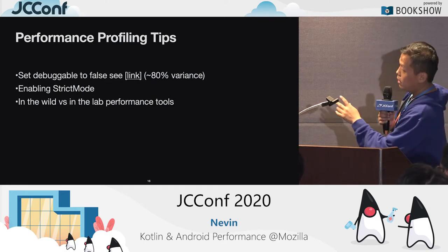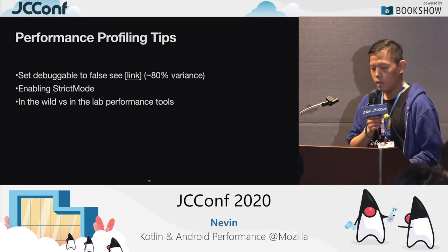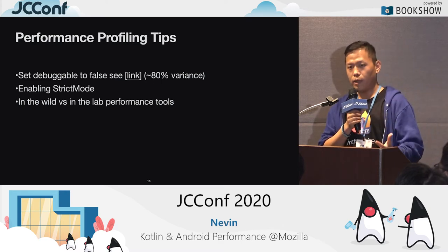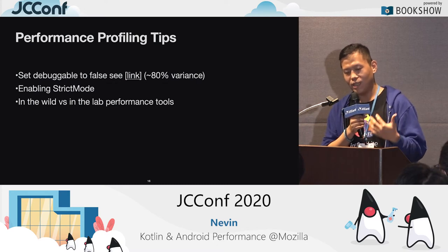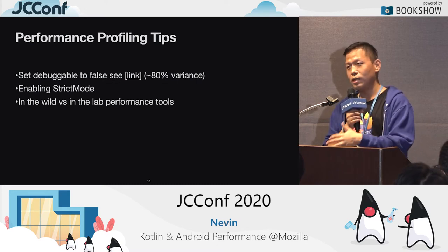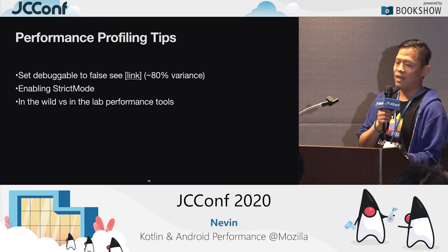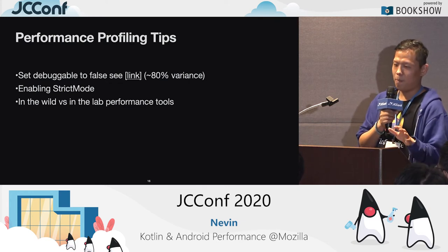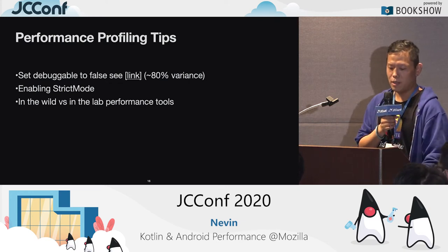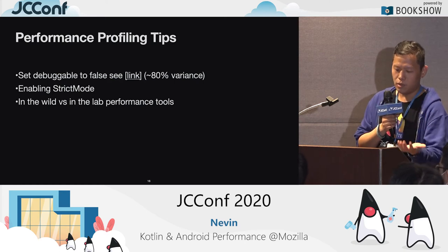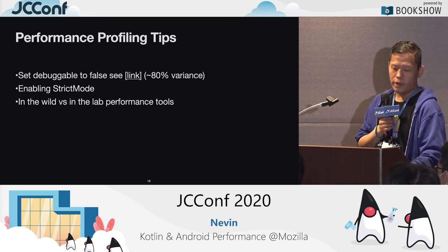The other thing is: enable strict mode. If you enable strict mode and set a penalty to 'death' on your debug build, every time there's a disk read on the main thread, the app will crash. Of course you don't want to do this in production, but you can check the build type in the code — if it's a local debug build, enable it and set penalty to death.